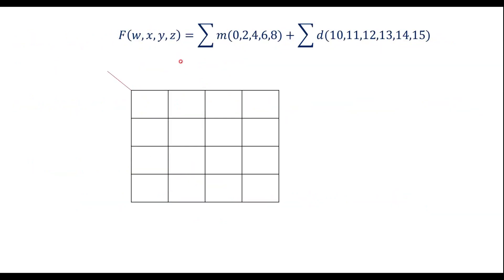This is the first function. The variables are w, x, y, z. So here we should write w, x on one axis and y, z on the other axis, as we know in kmap.